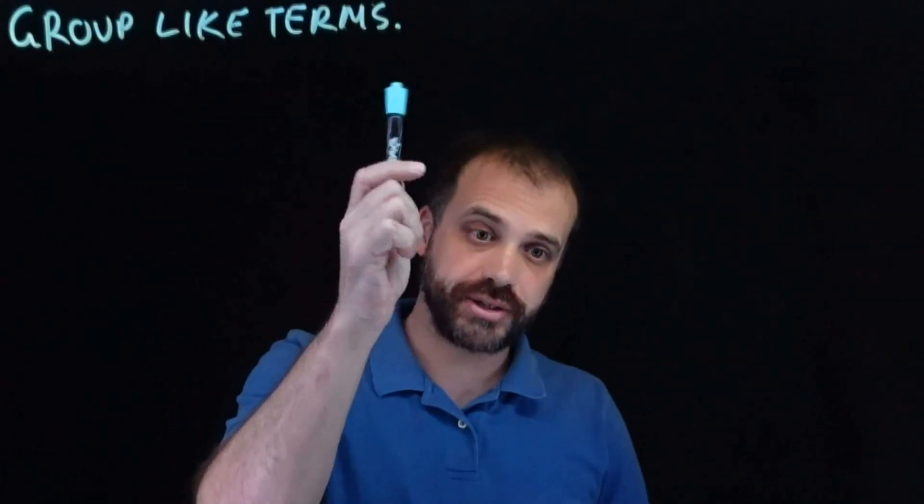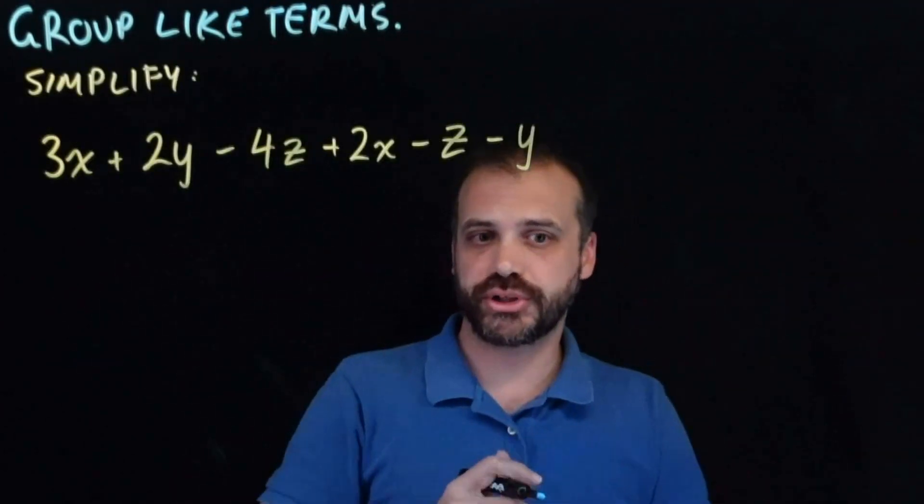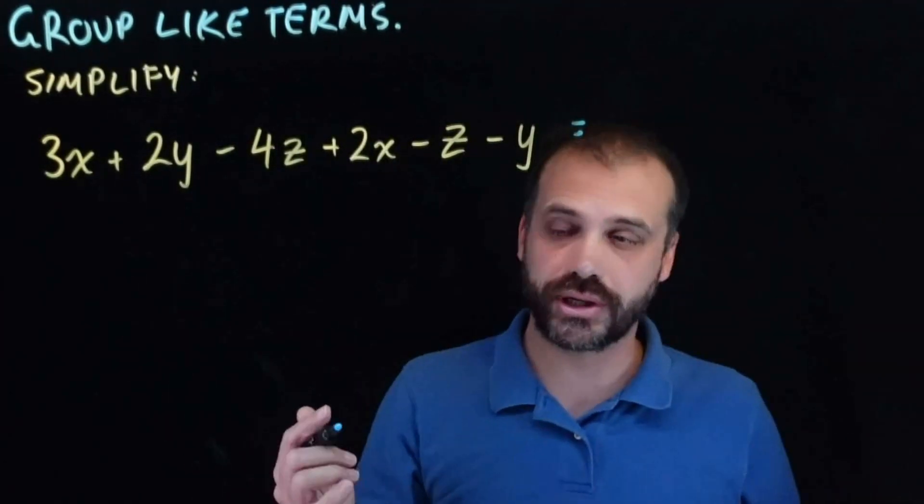So we're going to be adding and subtracting surds here, and to do that you need to remember something that teachers have said to you before. Group like terms, and they probably did it in a question that looked like this. So to simplify an expression like this you are grouping like terms.